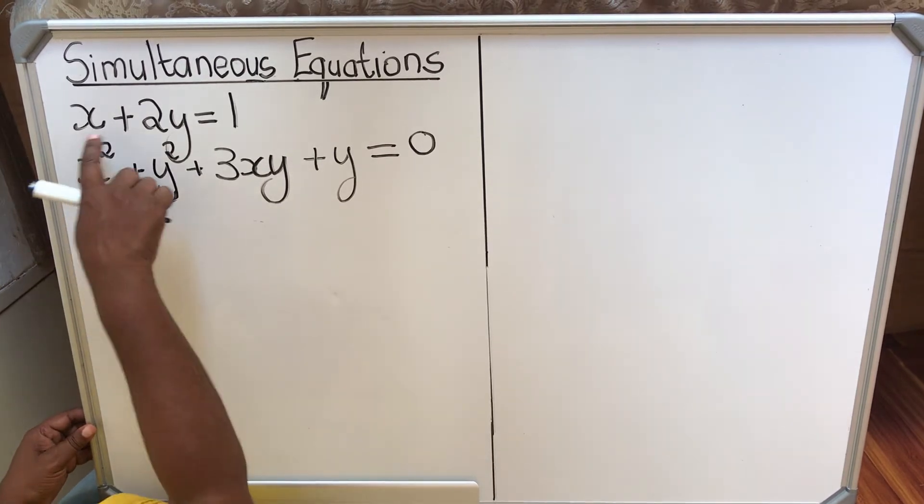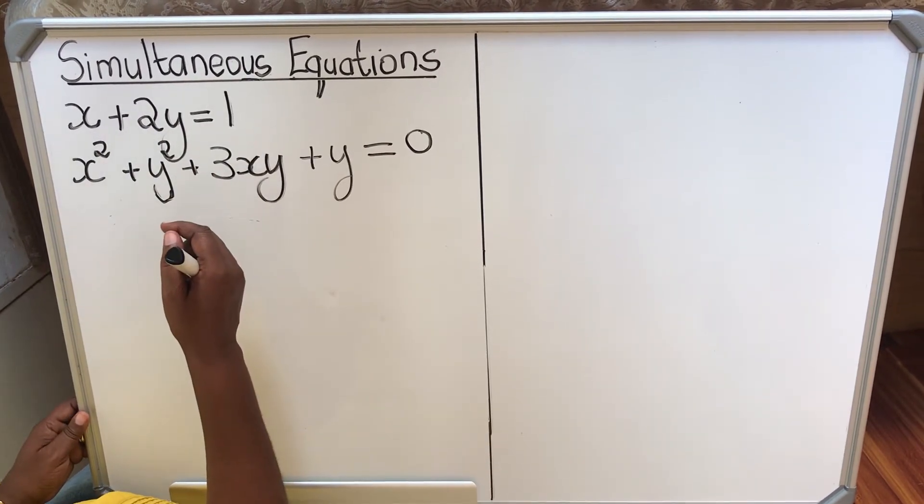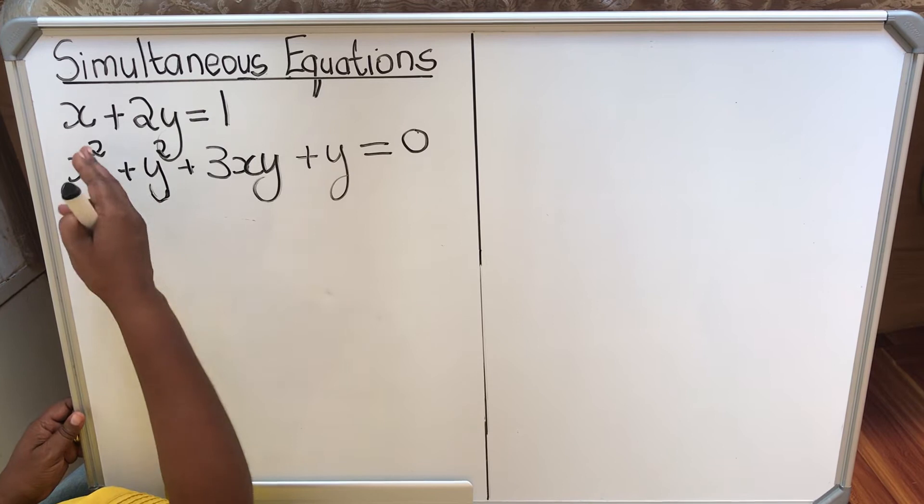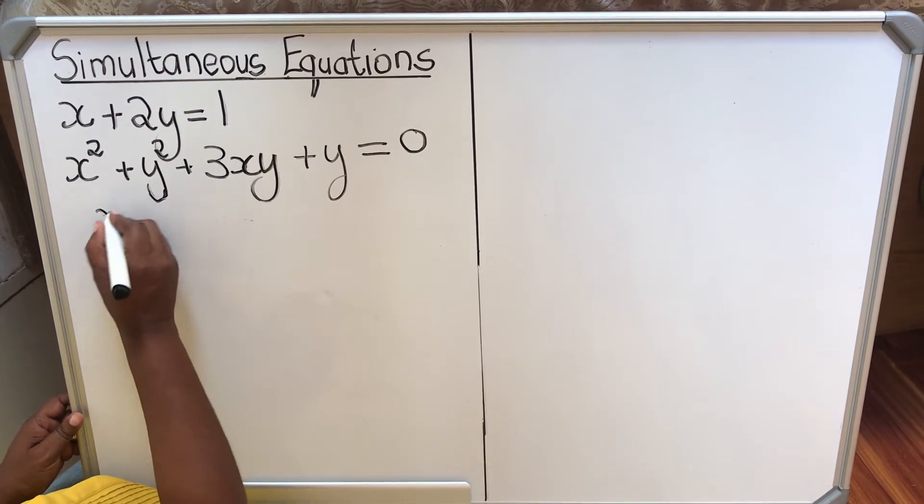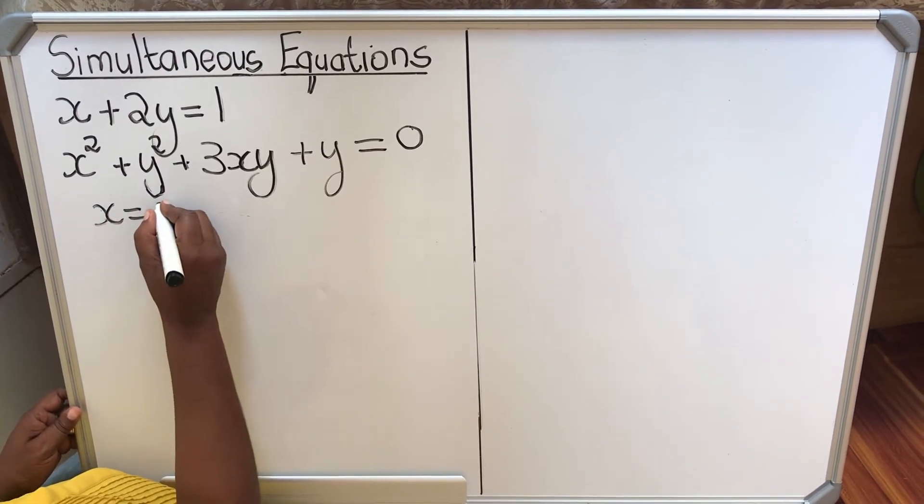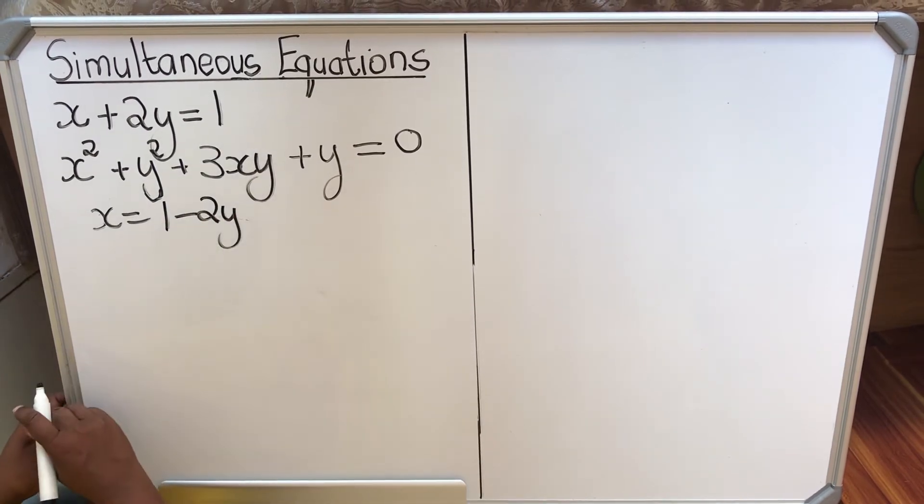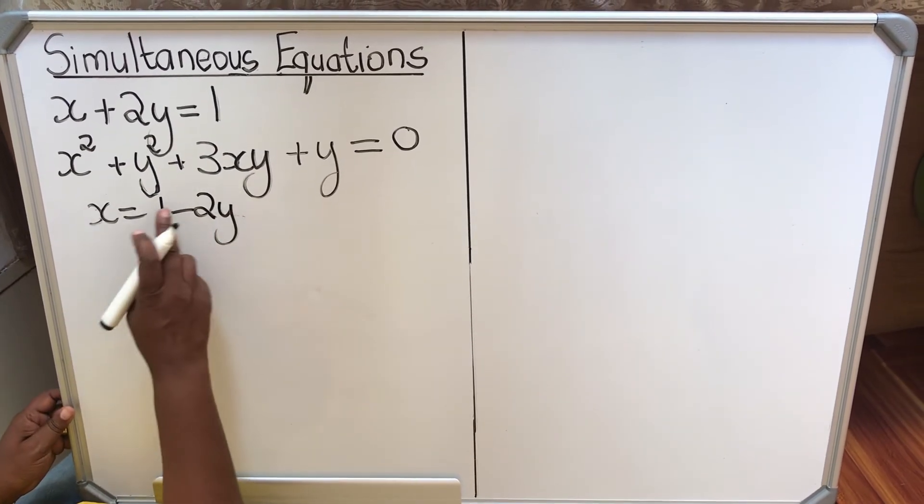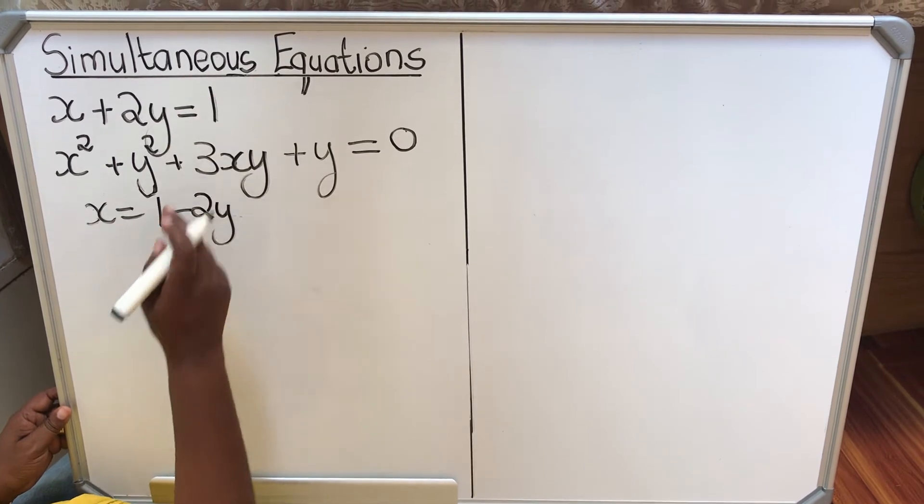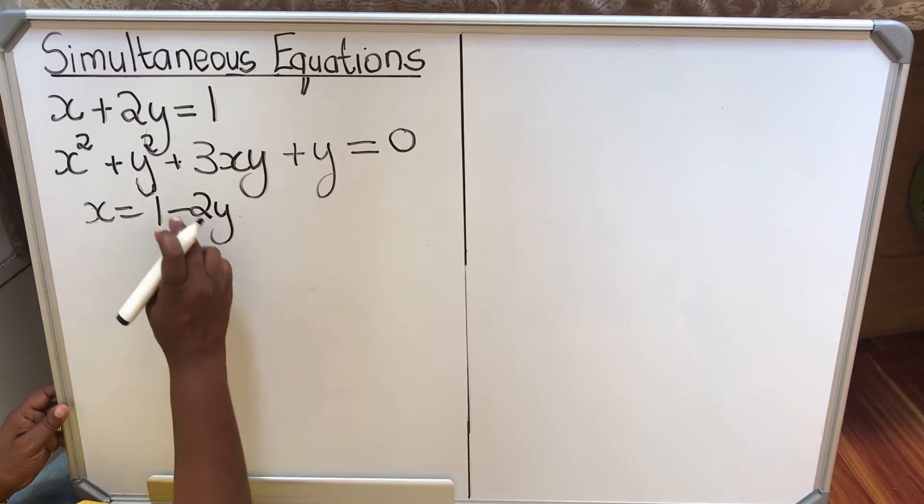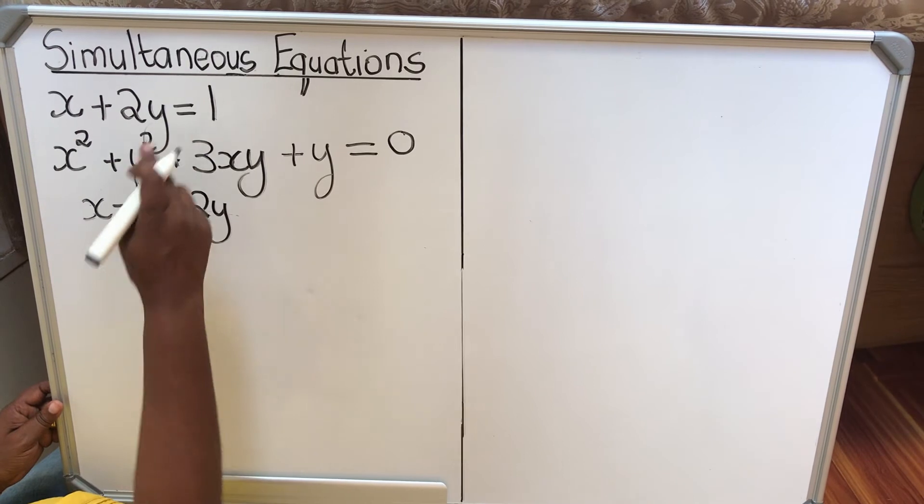The first thing, take the linear one and solve for the easier variable. In this case the x is easier. So we're going to have x equals 1 minus 2y. After doing that, take the x value and substitute in the complicated equation. Please don't substitute in the first equation. It is the same equation.